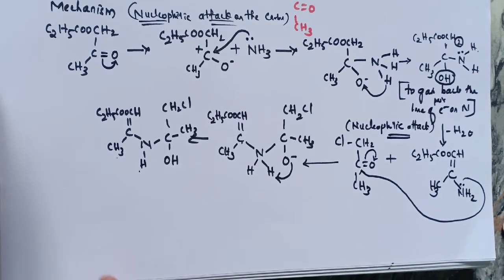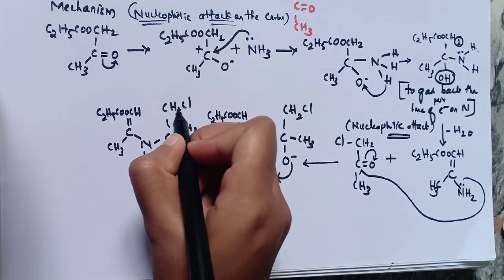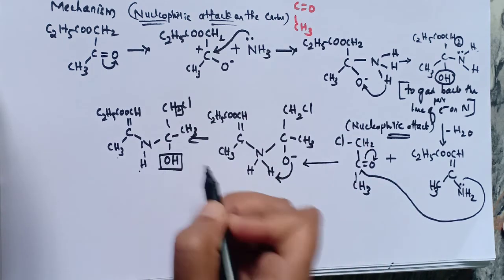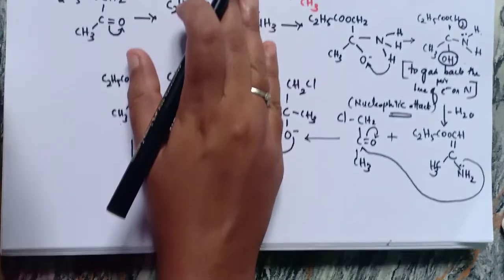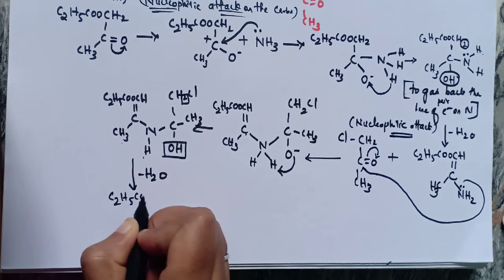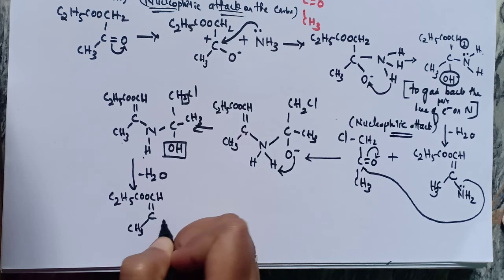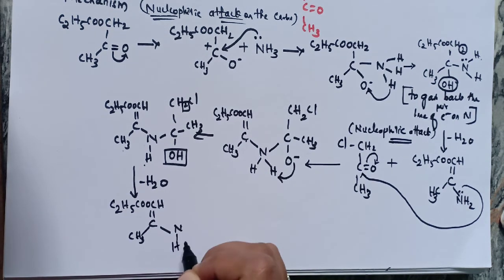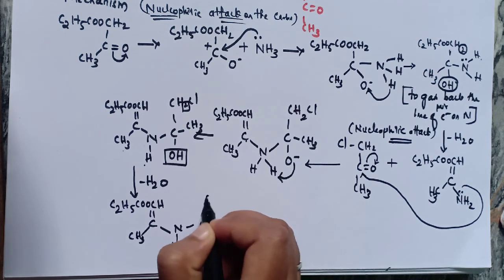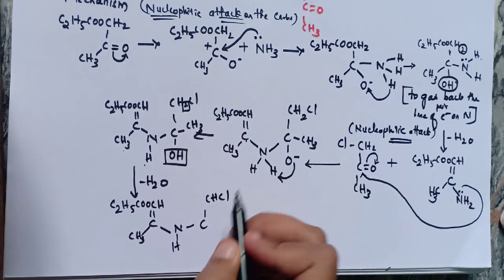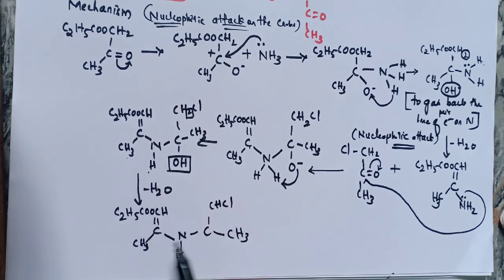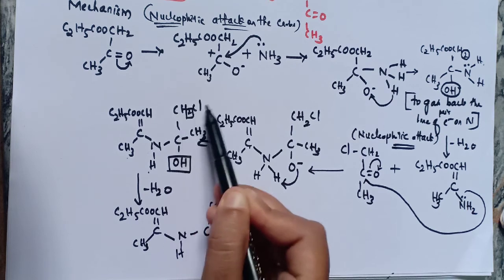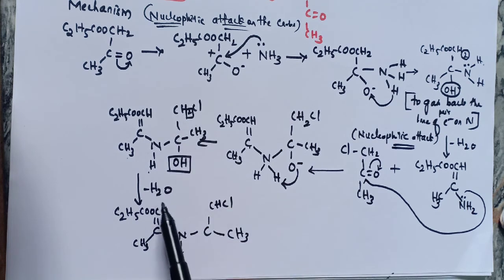In the second water elimination, the nitrogen hydrogen and the OH group are removed as H2O. The structure after this elimination is: C2H5-COO-CH=C(CH3)-N=C(CH3)-CHCl, where a new double bond to nitrogen has formed. The OH and one hydrogen have been removed, giving us the penultimate intermediate.